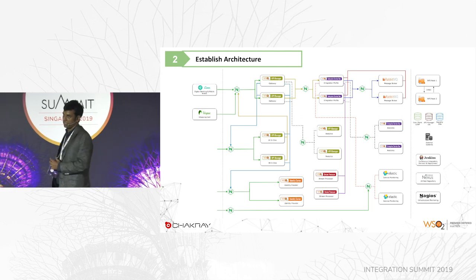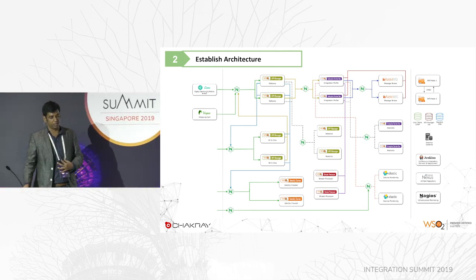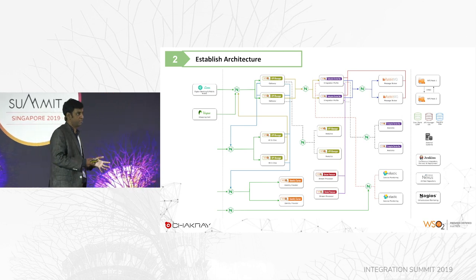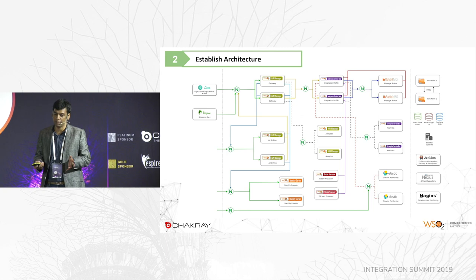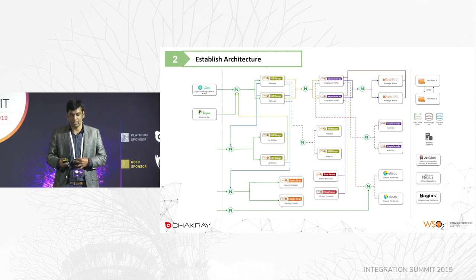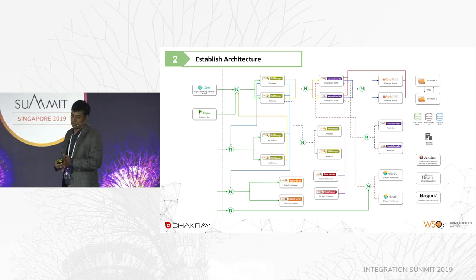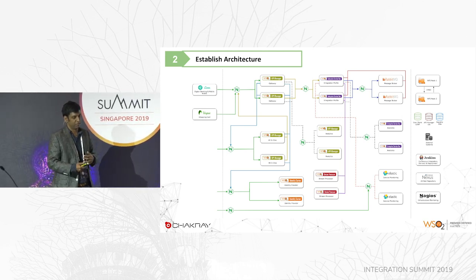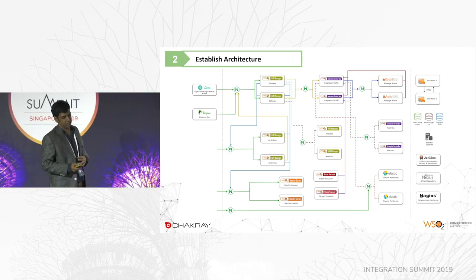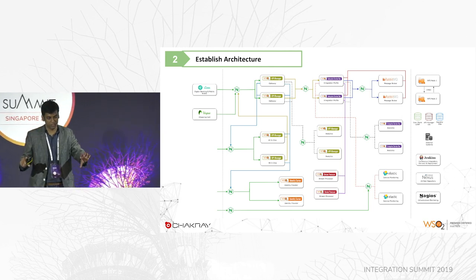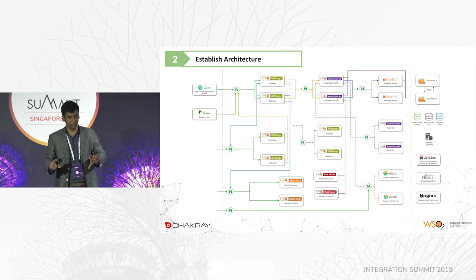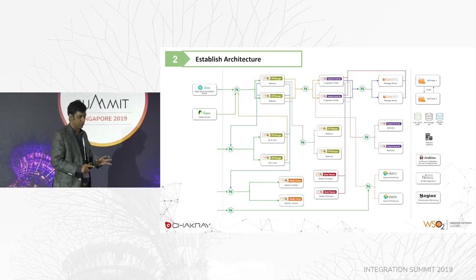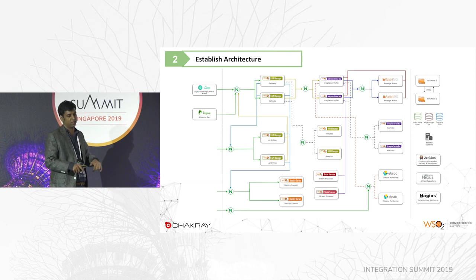The third point is the deployment model. You need to convert that architecture into a deployment model, which requires capacity planning based on TPS and latency numbers. We have to evaluate infrastructure scalability for at least five years, then identify how many nodes are needed for each server. This covers the API management portion — the EI and other boxes are not shown here to keep the diagram readable — but the result is a deployment architecture model with many components.